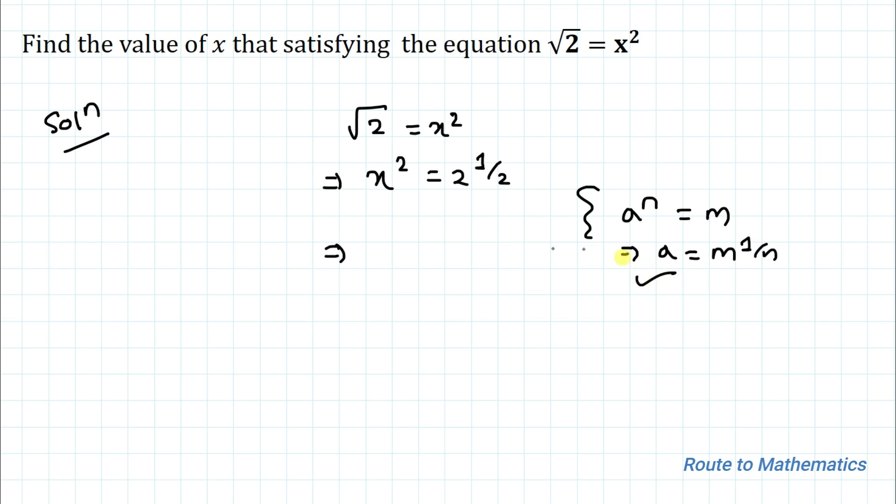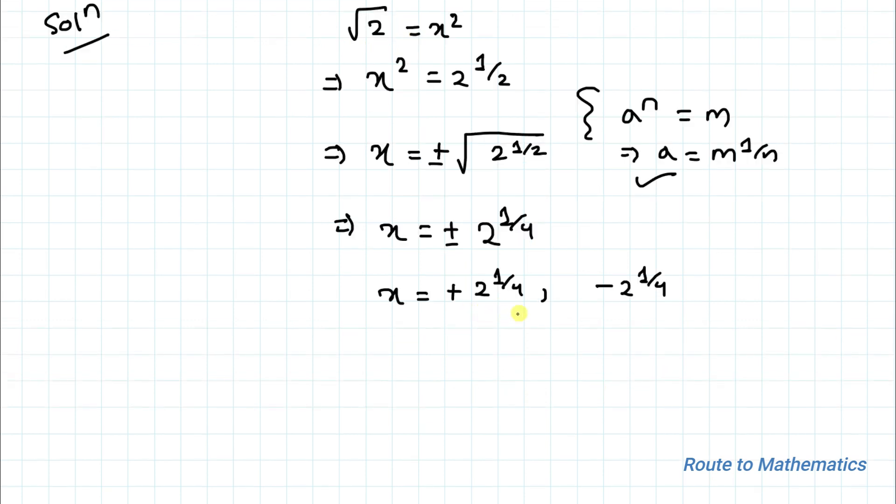By applying this law we can write x equals plus or minus root of 2 to the power 1 by 2. This implies x equals plus or minus 2 to the power 1 by 4. From here we can write x equals plus 2 to the power 1 by 4 and minus 2 to the power 1 by 4. These are the solutions of x.